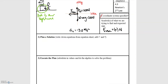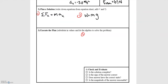Our next step is to plan our solution. We're only concerned with the x direction, so we'll apply Newton's second law to the x direction: the sum of the forces in x equals mass times acceleration in x. We'll also need that we don't know the mass, but we do know the weight of the box, so we'll use weight equals m times g.